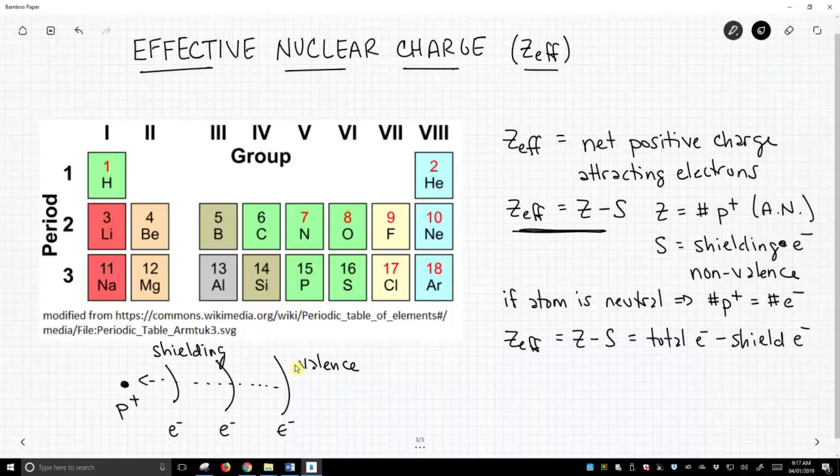Well, the total number of electrons, take away the number of shielding electrons, is simply equal to our valence electrons.